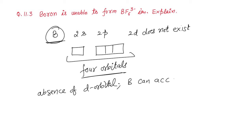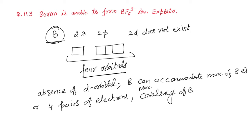Boron can accommodate maximum of 8 electrons or 4 pairs of electrons. That means, it can form maximum of 4 bonds. Boron can form maximum of 4 bonds. Or we can say, maximum covalency of boron is 4.